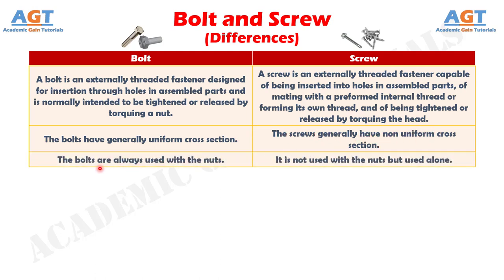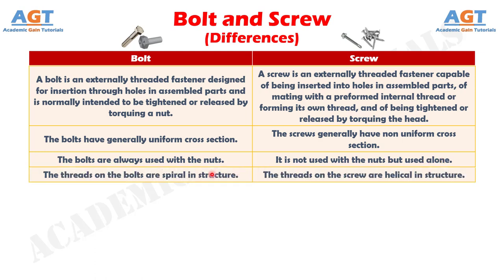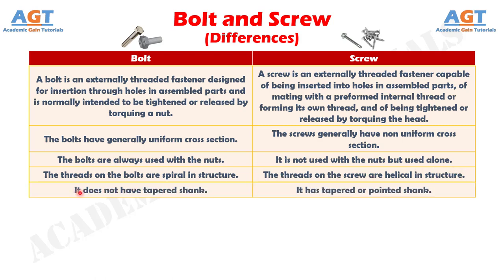Number 3: Bolts are always used with nuts, whereas a screw is not used with nuts but used alone. Number 4: The threads on bolts are spiral in structure, whereas the threads on a screw are helical in structure. Number 5: A bolt does not have a tapered shank, whereas a screw has a tapered or pointed shank.